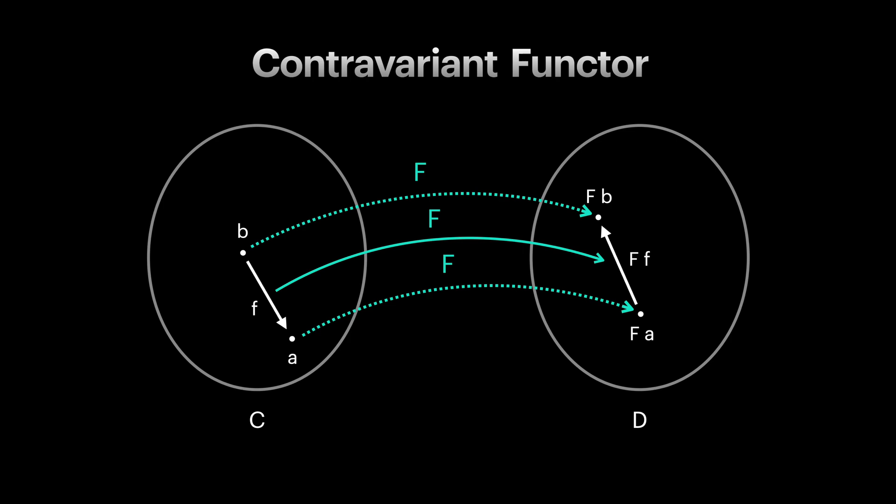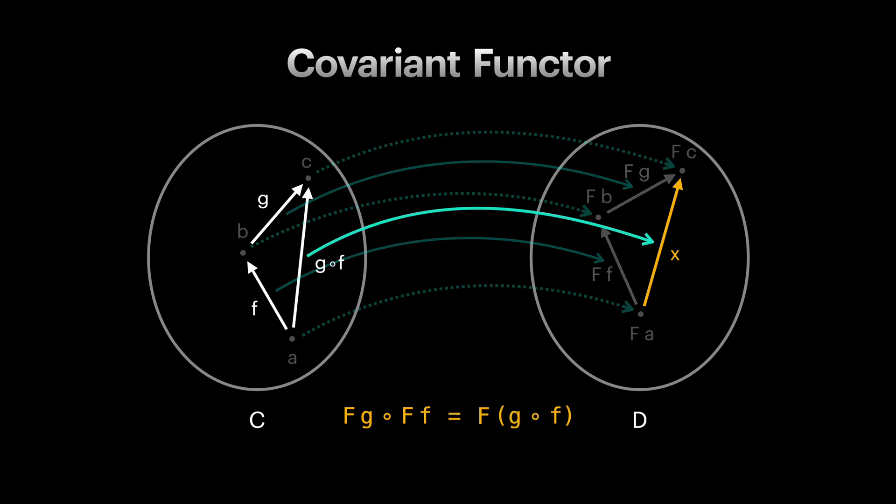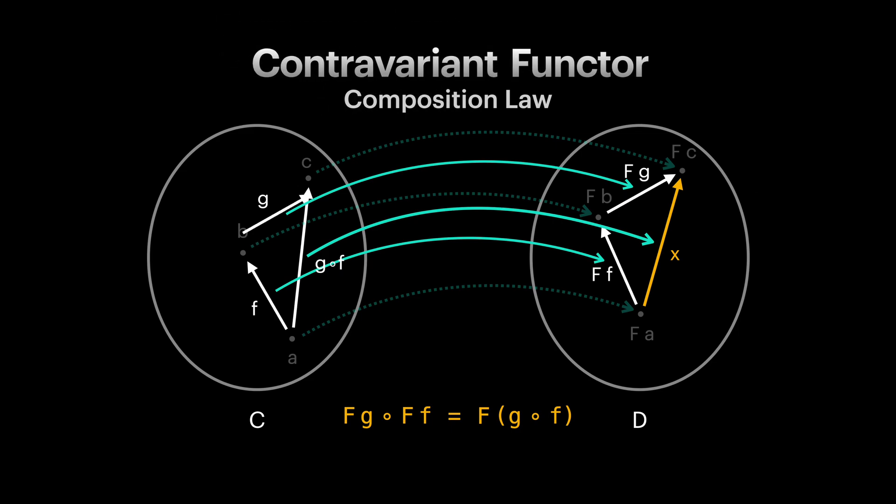Contravariant functors also follow some laws, but in order to learn about them, let's step back and look again at covariant functor laws which we are already familiar with. Let's start with composition. We learned that functor preserves composition of arrows when mapping them. This means if we first lift our functions F and G first, and then compose them, it should give us the same arrow as if we first compose F and G, and then lift the resulting function. This is how we formalize the idea of preserving composition in functors. And we refer to it as the composition law. Nothing new so far, we've already seen this couple of times. In order for us to get to contravariant functor laws, the only thing we need to do is to reverse the arrows in the first category and reflect that in our composition law.